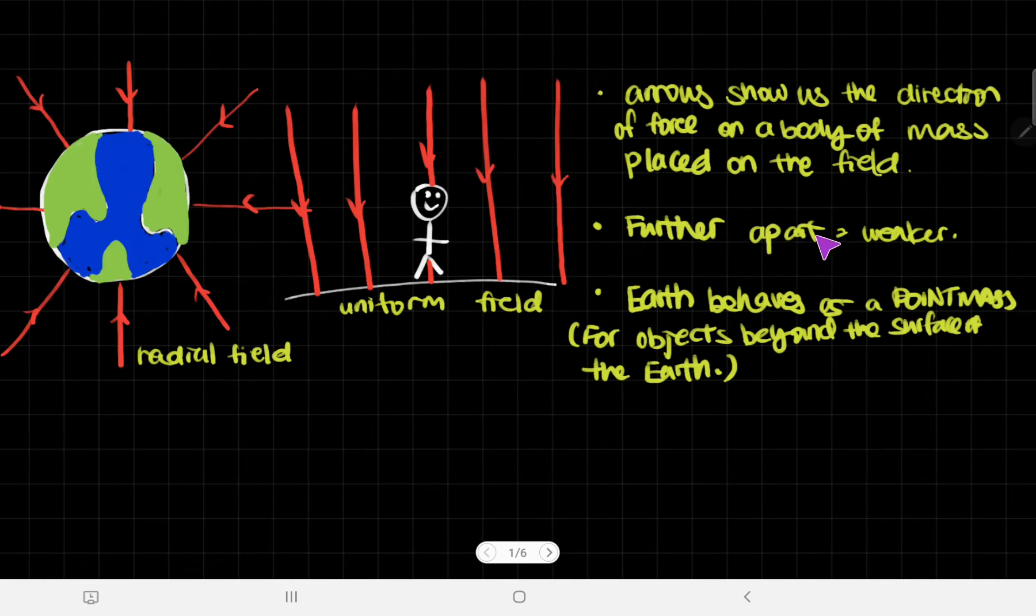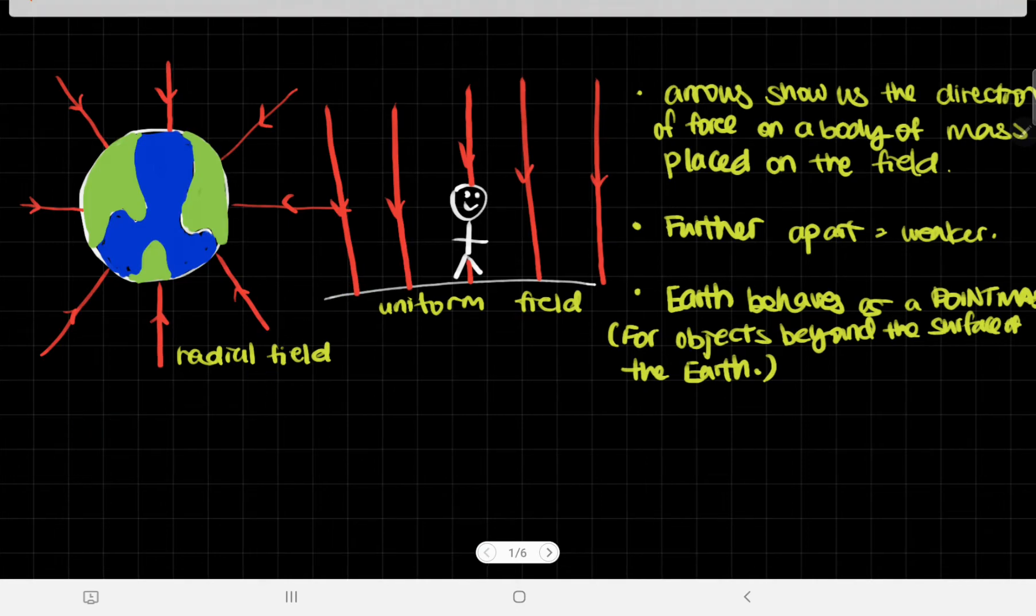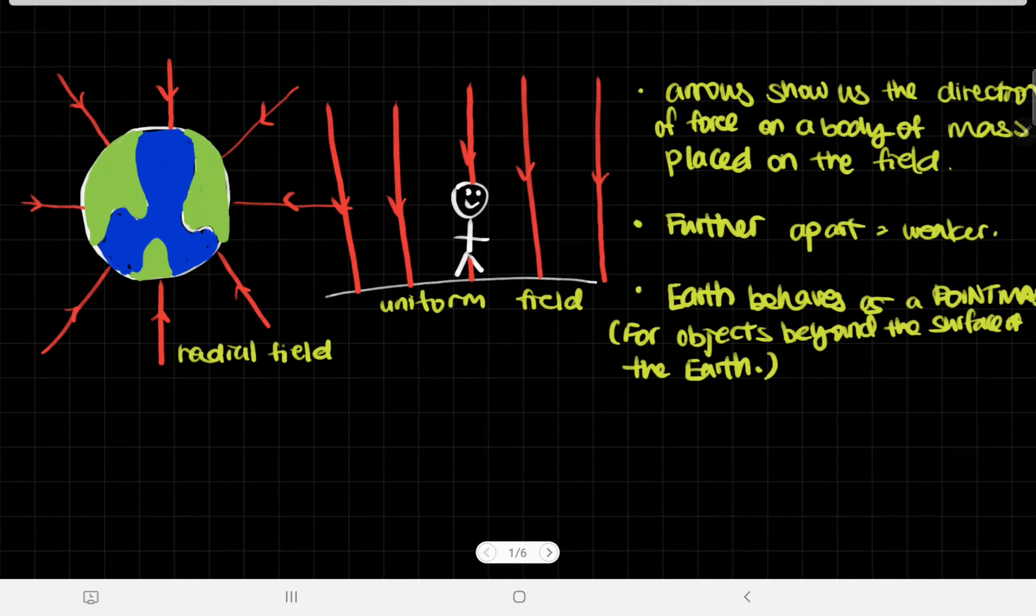If the field lines are further apart, then they're weaker. We can see that in a radial field, the closer you are to Earth, the closer together the lines are, which means the stronger the gravitational force. The further you are away from Earth, the further apart the field lines are. This is why we can prove that the field is less strong when you're far away from Earth.